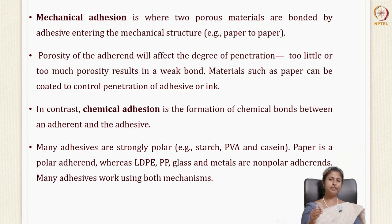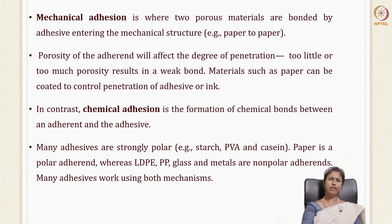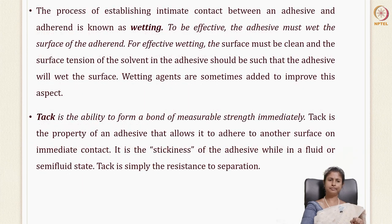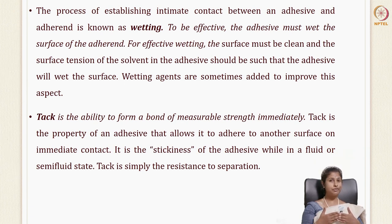Generally, materials like paper are coated so that penetration of the adhesive into the surface can be controlled. In chemical adhesion, a chemical bond is formed between the adherent and the adhesive. Many adhesives are strongly polar — like starch, PVA, and casein — and paper is a polar adherent, whereas plastics like LDPE, PP, and glass are non-polar adherents. Many adhesives work in both mechanisms. Two important terms are wetting and tack. Wetting is the process of establishing intimate contact between the adhesive and the adherent.